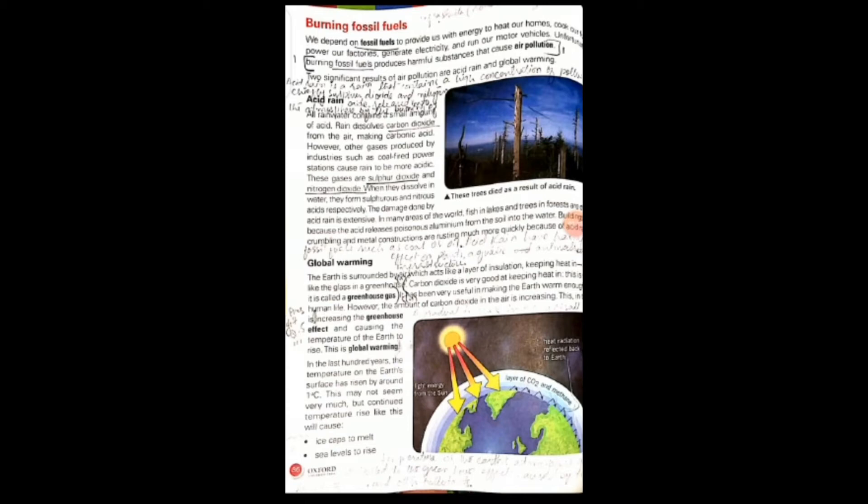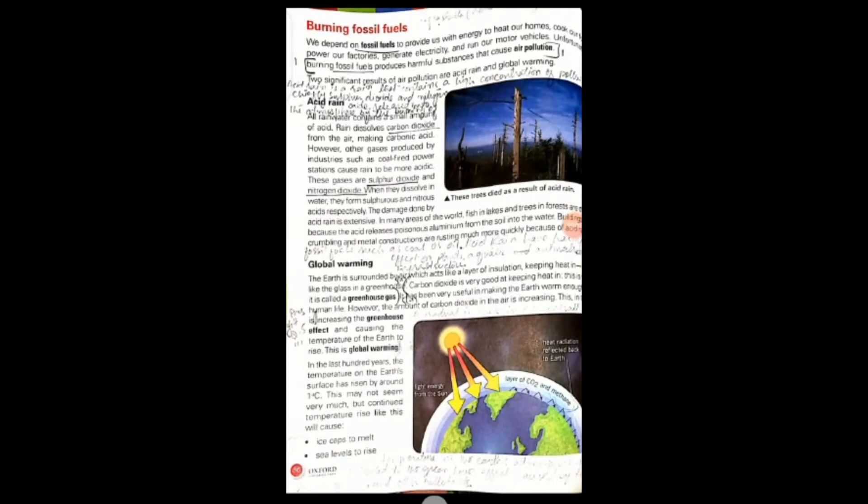What do you mean by global warming? For understanding global warming, firstly we should know what is the greenhouse effect. Earth is surrounded by air which acts like a layer of insulation. The heat is trapped in that layer, which is called the greenhouse effect.